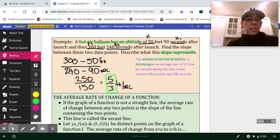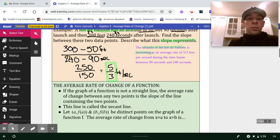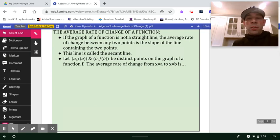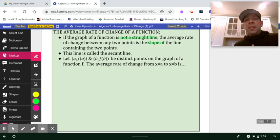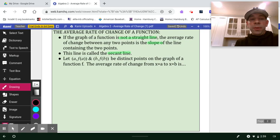So let's continue cruising on. Here's probably the deepest, most theoretical part we'll get into. We're going to talk about the average rate of change of a function. So if you have the graph of a function, and it's not a straight line, then the average rate of change between any two points is simply the slope of the line containing those two points. And that line is called a secant line.